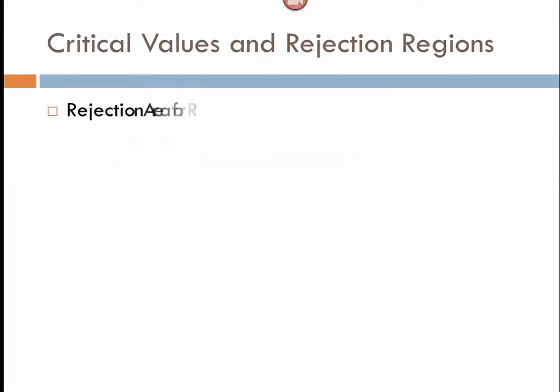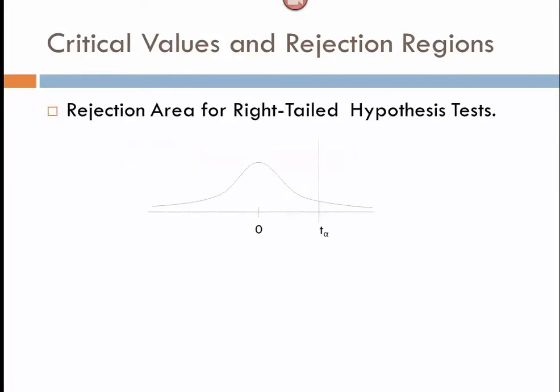For a right-tailed test, we have the rejection region on the right and the failing to reject region to its left. Alpha is right there. This represents my critical value.